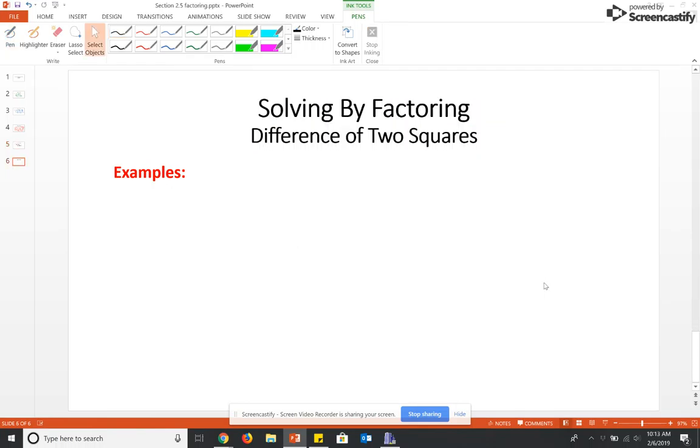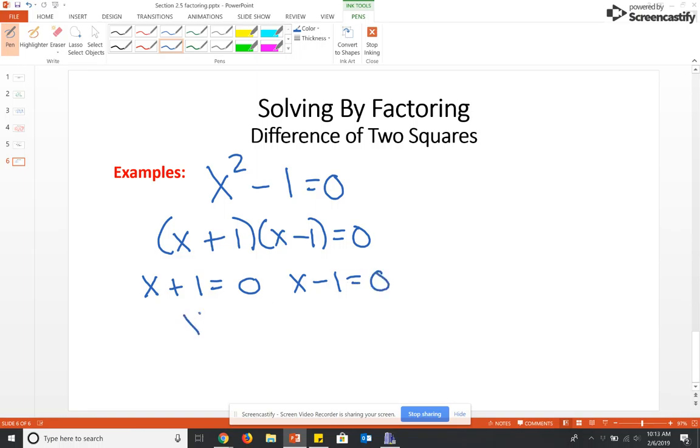So for example, what if we had X squared minus 1 equals 0? This one drives people crazy for some reason. Well, this is a difference of 2 squares because 1 is a perfect square. So this is going to be X plus square root of 1 is 1 and X minus 1. And then once you got it completely factored, you set each factor to equal 0 and you get negative 1 and positive 1.